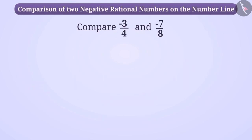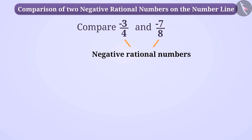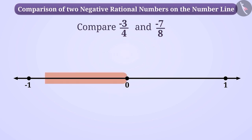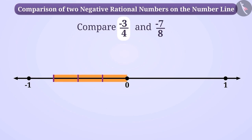Similarly, let's compare -3/4 and -7/8. Because both are negative rational numbers, their position is to the left of 0 on the number line. Since in both numbers the numerator is smaller than the denominator, we can say that their position will be in between 0 and -1 on the number line. The location of -3/4 can be represented by dividing the distance between 0 and -1 into 4 parts and taking 3 parts out of it.